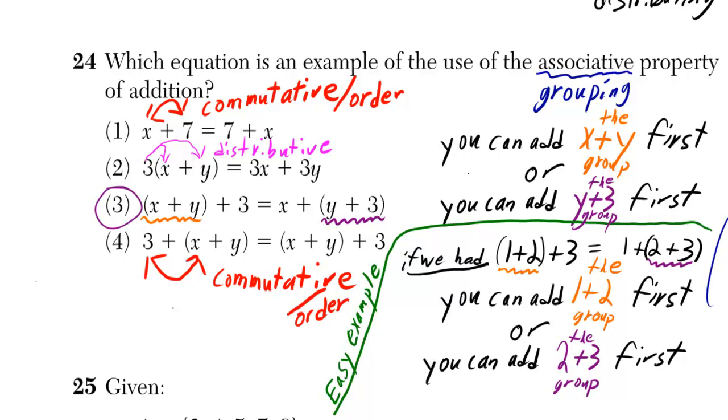An easier example of this is: what if we had one plus two plus three? Well, we could say that's equal to one plus whatever you get after you do two plus three. So we could say that we can add one plus two first, or we could add two plus three first.